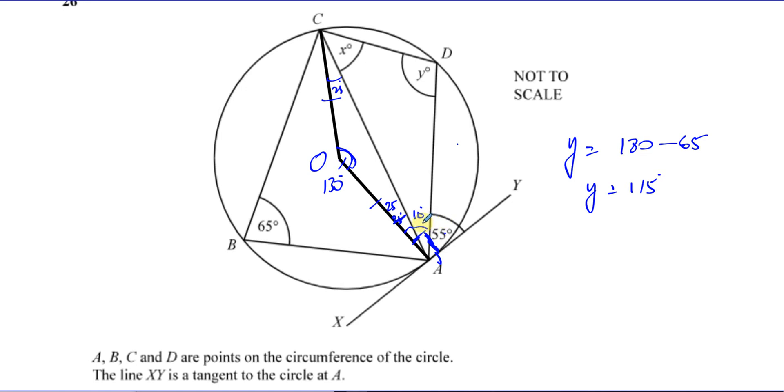If this is 10 degrees, and we know this angle is 115 because of the fact it's a cyclic quadrilateral, I can then find what X is. X is 180 minus 115 plus 10. So it's 180 minus 125 is 55, which is exactly what we found earlier.